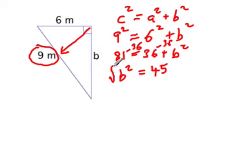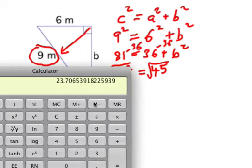And we take the square root of both sides, and the square root of 45 is going to be between 6 and 7.